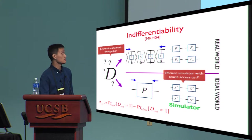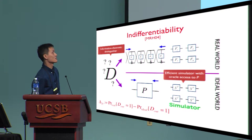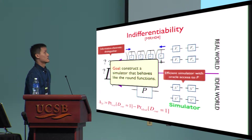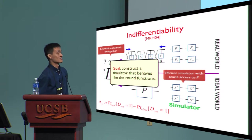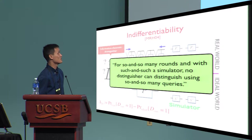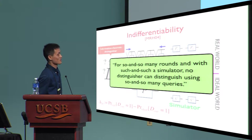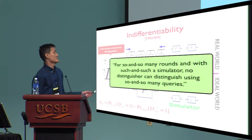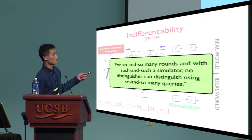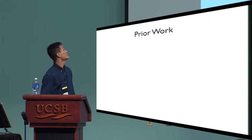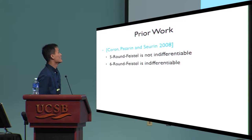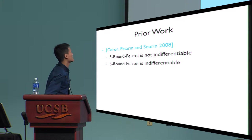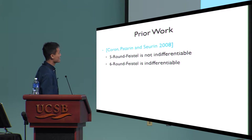We require the simulator to be efficient, and it has oracle access to P. Our goal is to construct such a simulator. Indifferentiability means that for a given number of rounds and with such a simulator, no distinguisher can distinguish using a bounded number of queries — its advantage in the two worlds must be negligible.